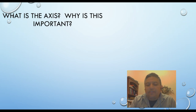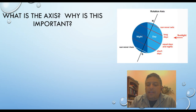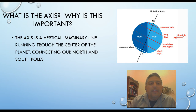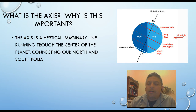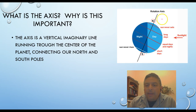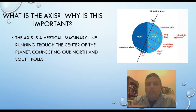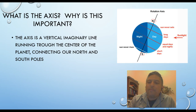What is the axis? Why is the axis so important? You're going to hear this a lot so might as well pay attention. The axis is a vertical and imaginary line running through the center of the planet, but it's also connecting the north and south poles. You can see the north pole over here on the top, south over here on the bottom, and you can see this black line over here in the middle. In reality that black line is not there, so that's why we say it's an imaginary line.